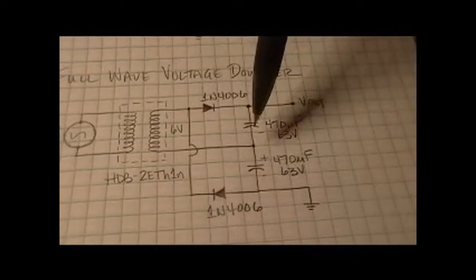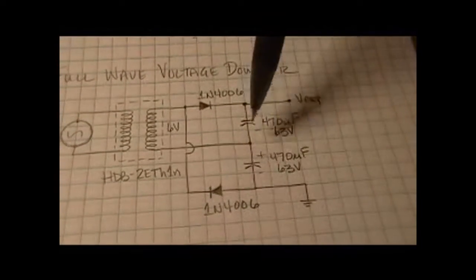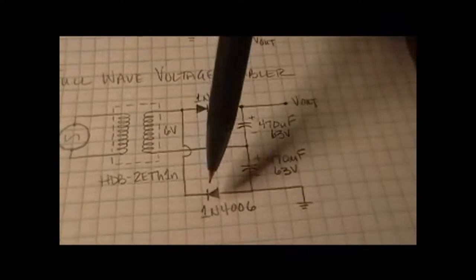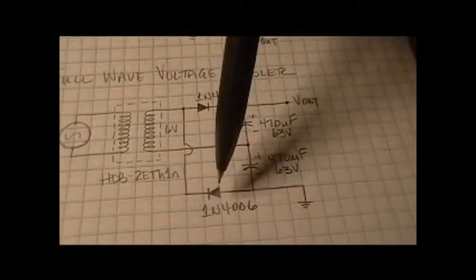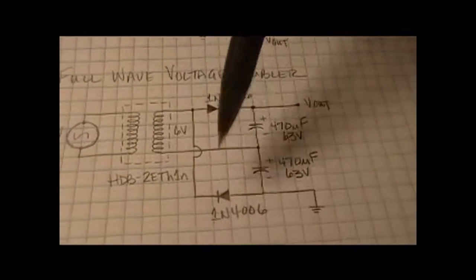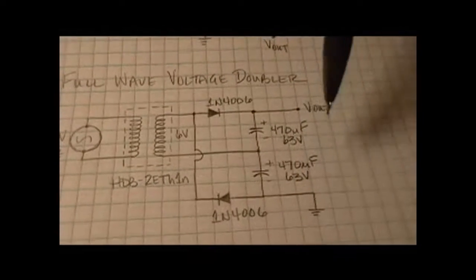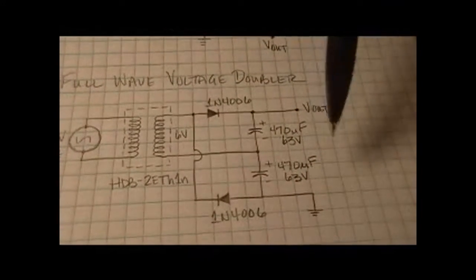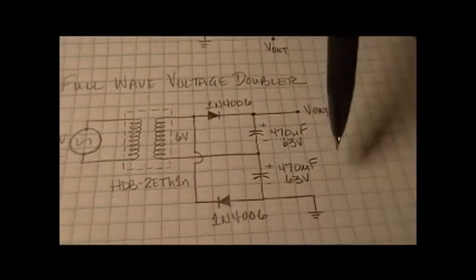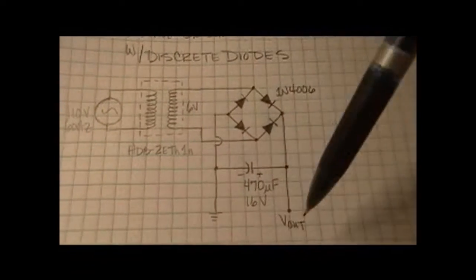But in each case we're charging these caps plus to minus, plus to minus, and half a cycle's charging this one, half a cycle's charging this one, and you get the voltage across the combination which is why this is a doubled circuit and also a full wave rectifier, not a bridge rectifier, a full wave rectifier, so you're looking at double the output. Now if I put a load on each of these it's going to drop a little bit but nonetheless you're going to see double the voltage out of this guy that you saw out of the original circuit here.